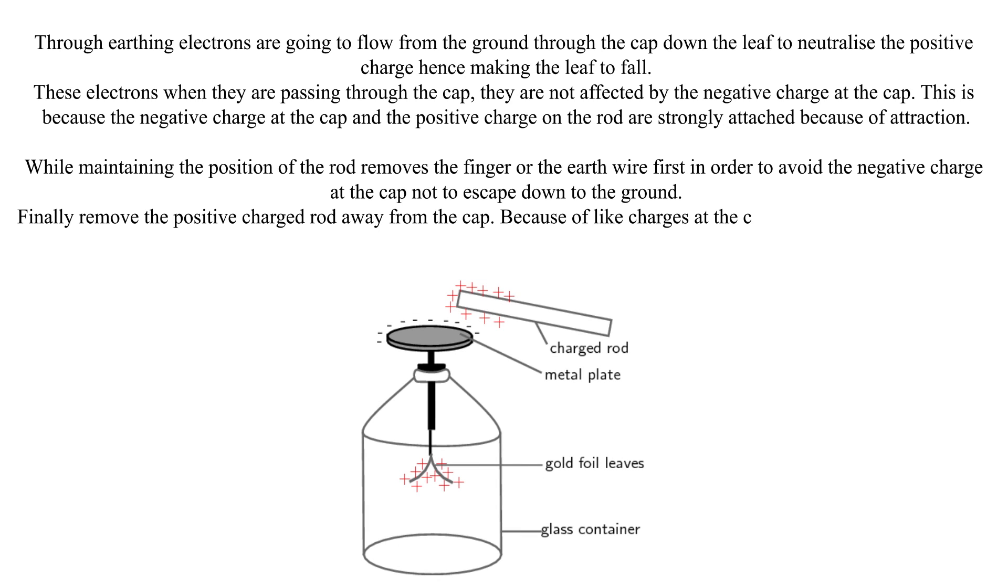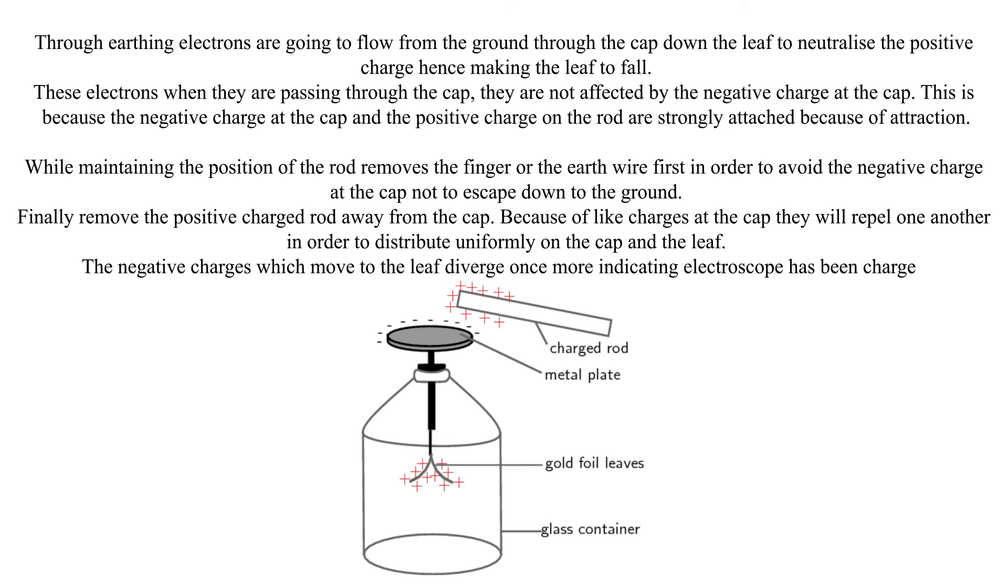Because of like charges at the cap, they will repel one another in order to distribute uniformly on the cap and the leaf. The negative charges which move to the leaf diverge once more, indicating the electroscope has been charged.